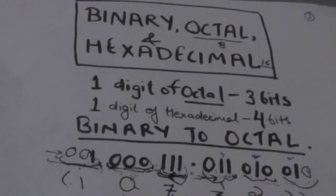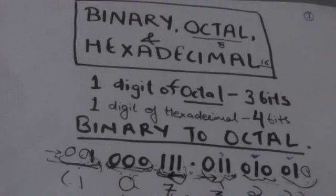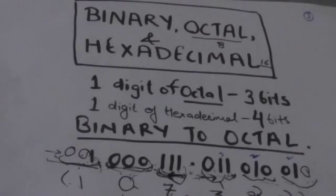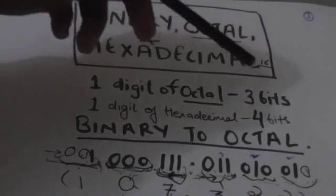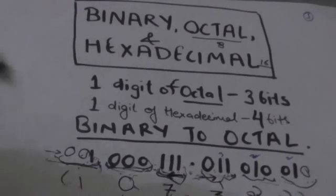Hello friends, welcome back to tutorials. In this tutorial we will learn how we can convert a binary number into an octal number or a hexadecimal number. The base of octal numbers is 8 and the base or radix of hexadecimal numbers is 16. One digit of an octal number corresponds to 3 bits, and one digit of a hexadecimal number corresponds to 4 bits.